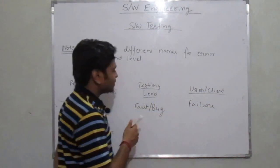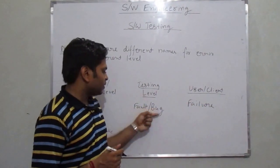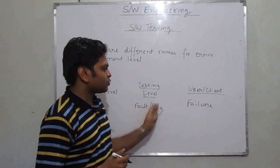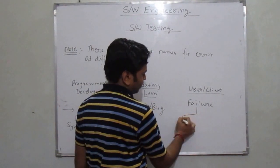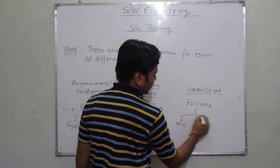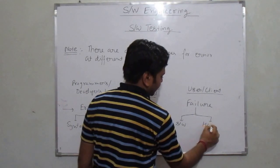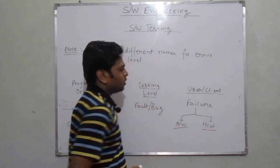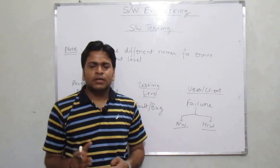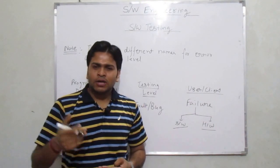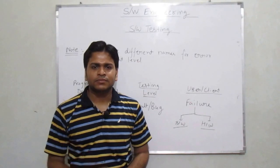Finally, at the user's level or the client's level, such an error which is still not recovered at the testing level is known as failure. That means if a tester is not even able to locate the bug, it leads to failure, and this failure can be at the software level or at the hardware level. We will discuss all kinds of testing in detail in our next lecture.